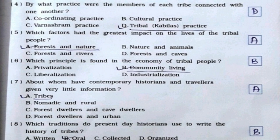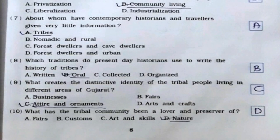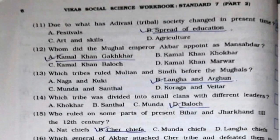Seventh: About whom have contemporary historians and travelers given very little information? It's option number A, tribes. Eighth: Which tradition do present-day historians use to write the history of tribes? It's option number B, oral. Ninth: What creates the distinctive identity of the tribal people living in different areas of Gujarat? It's option number C, attire and ornaments. Tenth: What has the tribal community been a lover and preserver of? It's option number D, nature.